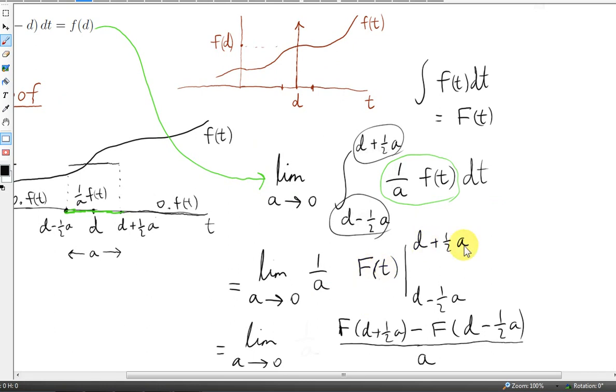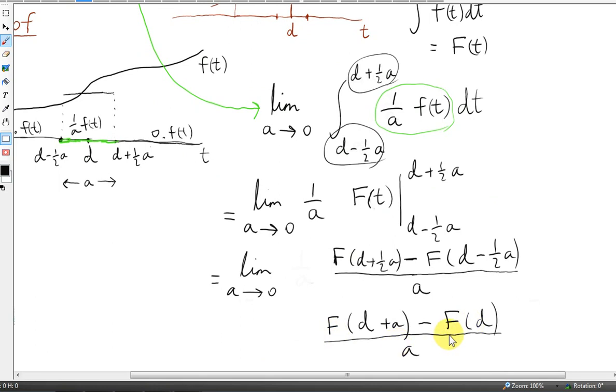And we have to evaluate the integral over these limits. So we evaluate big F at the upper limit, then we subtract big F at the lower limit, d minus a half, and we divide by a. Now this thing is actually the definition of the derivative of big F(t), but evaluated at t equals d.